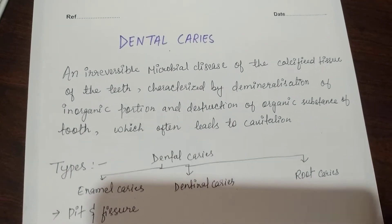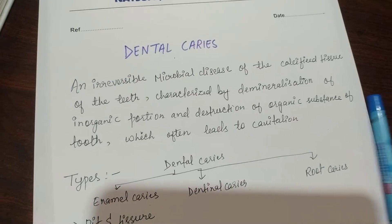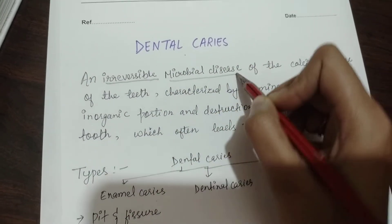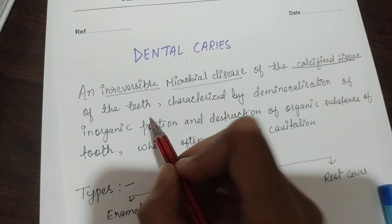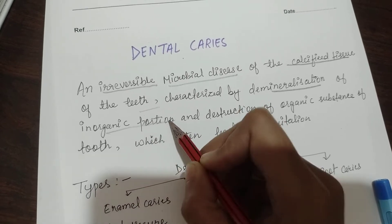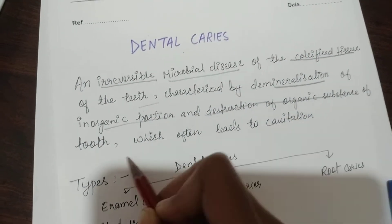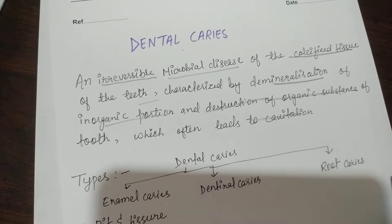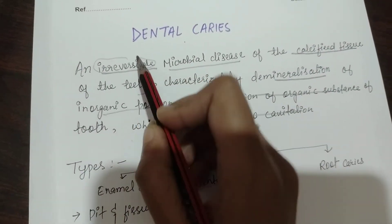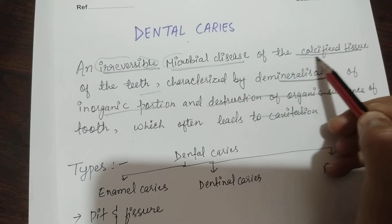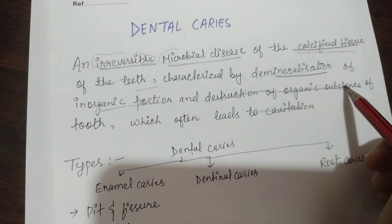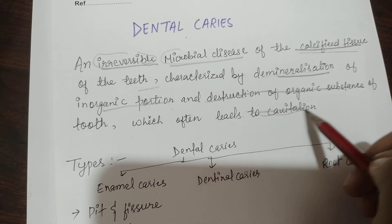The definition is important. According to Schaeffer, dental caries is an irreversible microbial disease of calcified tissue of teeth, which is characterized by demineralization of inorganic portions and destruction of organic substances of the tooth, which leads to cavitation.